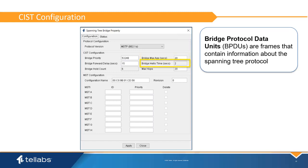BPDUs are sent at a minimum every hello time interval. The hello time is set to 2 seconds and cannot be modified. Max hops is the maximum number of hops that BPDUs can travel within the layer 2 network; the default is 20 and typically is not changed.